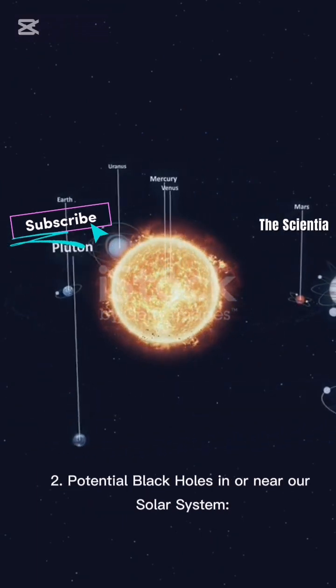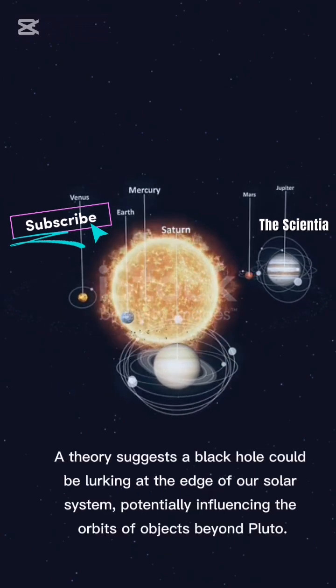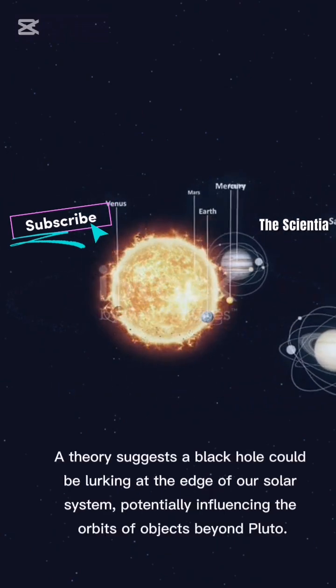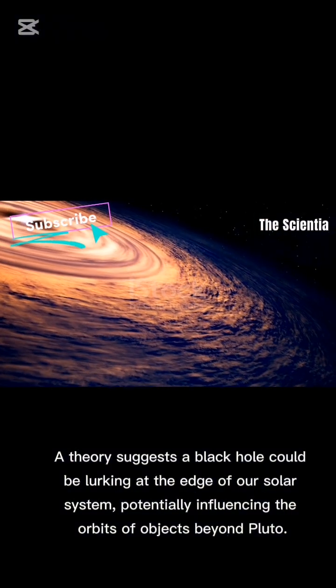Potential black holes in or near our solar system. Edge of the solar system. A theory suggests a black hole could be lurking at the edge of our solar system, potentially influencing the orbits of objects beyond Pluto.